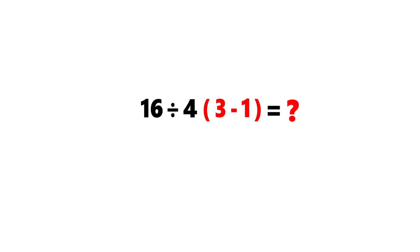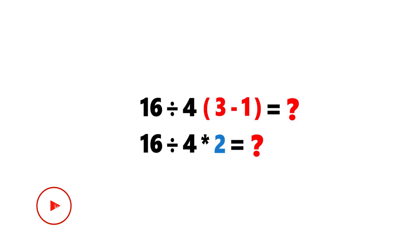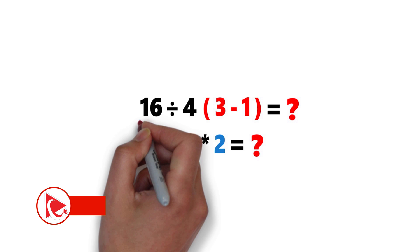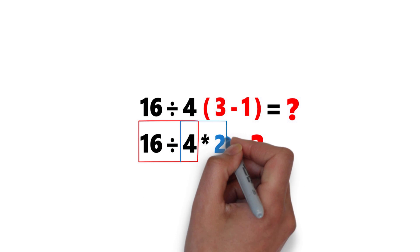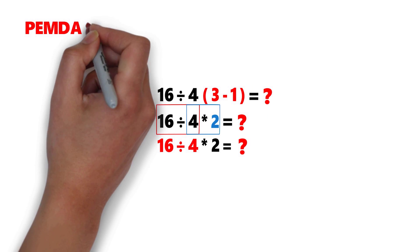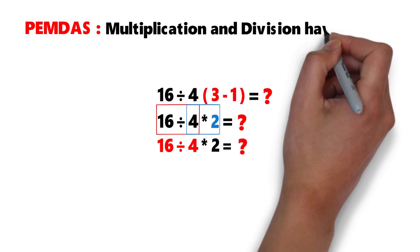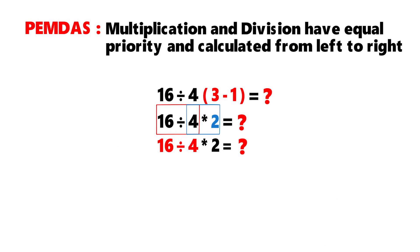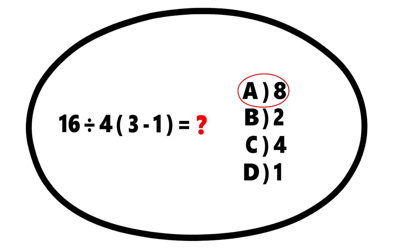The result of that calculation is 2. Next, we need to divide 16 by 4 before multiplying — because what PEMDAS doesn't explicitly mention is that multiplication and division have equal priority and are calculated left to right. Since 16 ÷ 4 is on the left, we do that first: 16 ÷ 4 = 4. Finally, we multiply 4 by 2 to get 8. So the correct choice is choice A: 8.